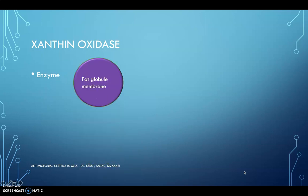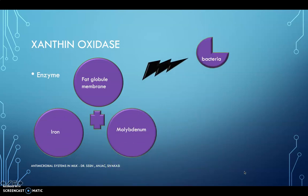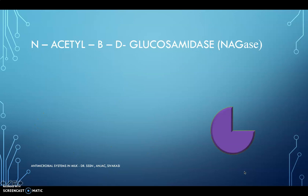Xanthine oxidase is an enzyme — unlike the previous proteins discussed, xanthine oxidase is an enzyme. It is linked with the fat globule membrane and it consists of iron and molybdenum. It also inhibits bacteria.